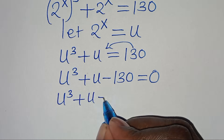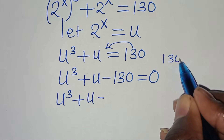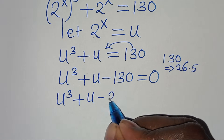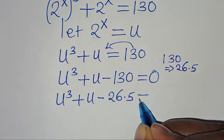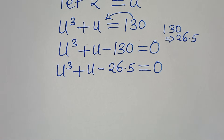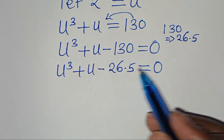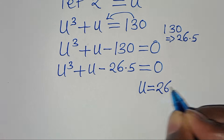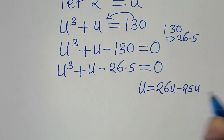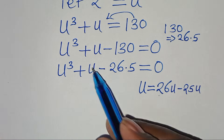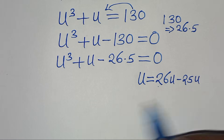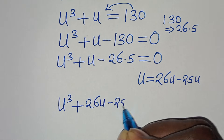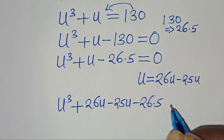So we have u to the power of 3 plus u minus 130. We can express 130 as 26 multiplied by 5. So this is minus 26 multiplied by 5, equal to 0. Now, the next step is we can express u as 26u minus 25u. If we say 26u minus 25u, this is the same thing as plus u. So we substitute this so that we have u to the power of 3 plus 26u minus 25u, then subtract 26 times 5, equal to 0.